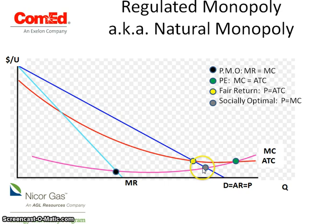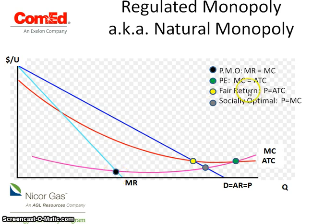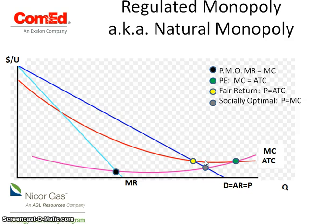To summarize: understand why natural monopolies exist — economies of scale. Understand that they're not producing at the profit-maximizing output. The government has two choices: the fair return price, where the formula is price equals ATC, but they're not meeting the socially optimal amount; or the government could have them produce at the socially optimal amount, but if they do, the company will incur an economic loss and the government has to subsidize that.